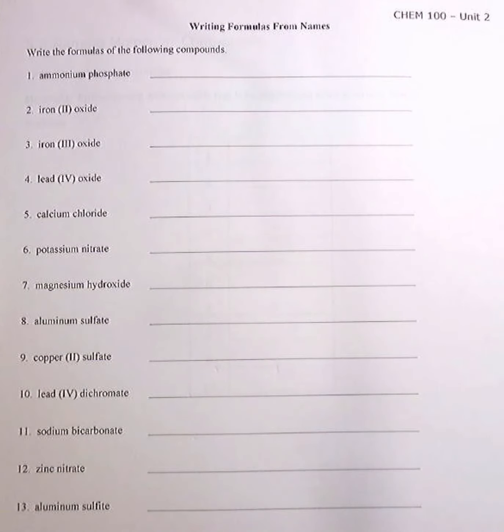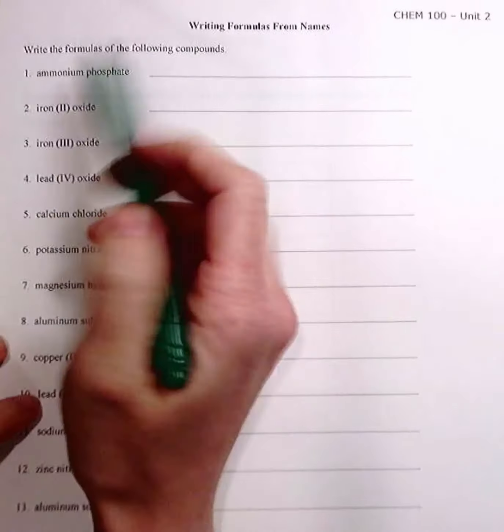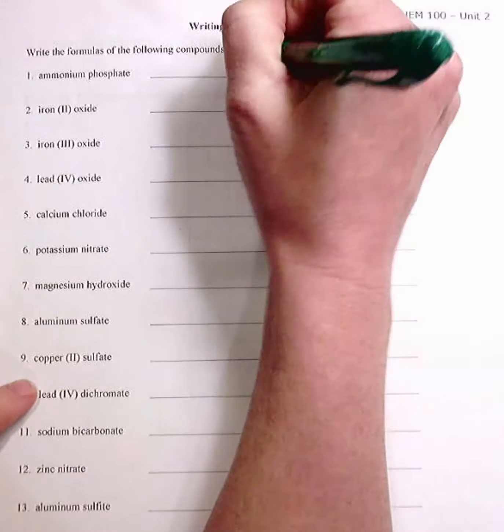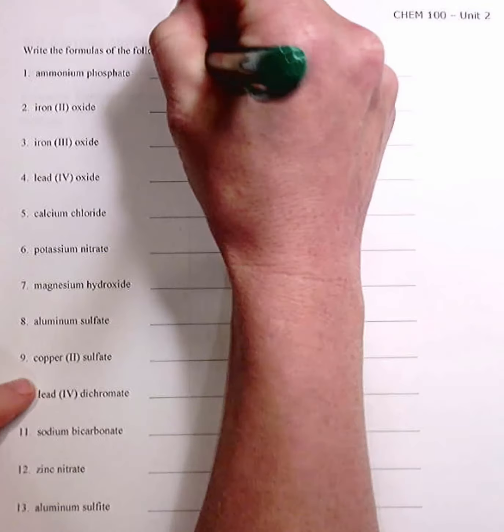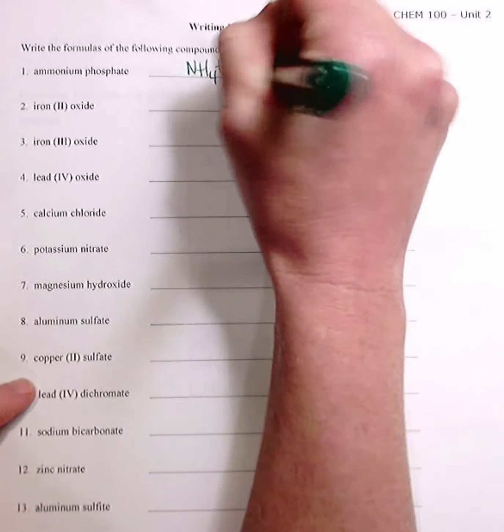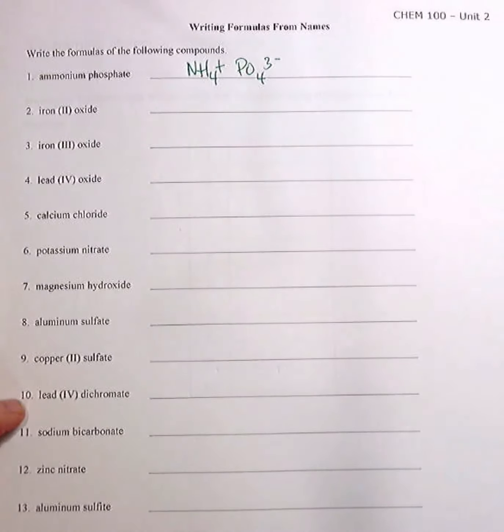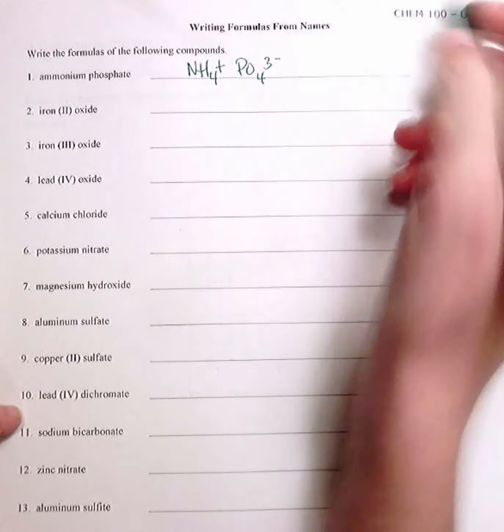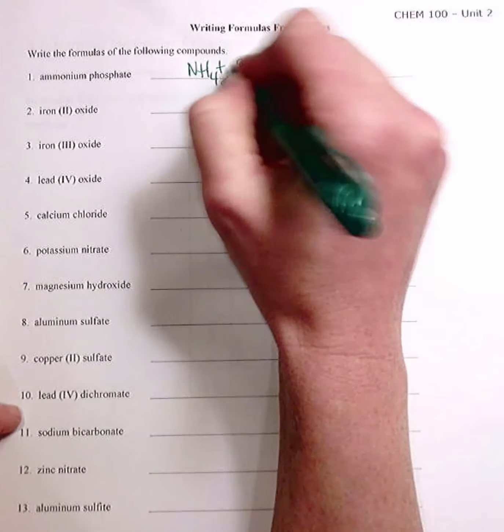We're going to finish up unit two and first go over writing formulas from names. So ammonium phosphate, this is ammonium, this is phosphate, and you know your polyatomic ions so well, so you do the cross and the drop.